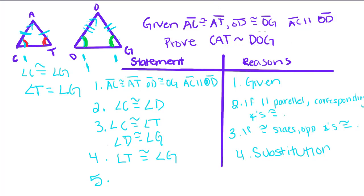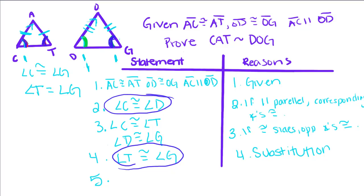Our last step is to prove that triangle CAT is similar to triangle DOG. To prove triangles are similar we only need two angles that are congruent. We have angle T congruent to angle G, and angle C congruent to angle D — that's enough to say triangle CAT is similar to triangle DOG by Angle-Angle.